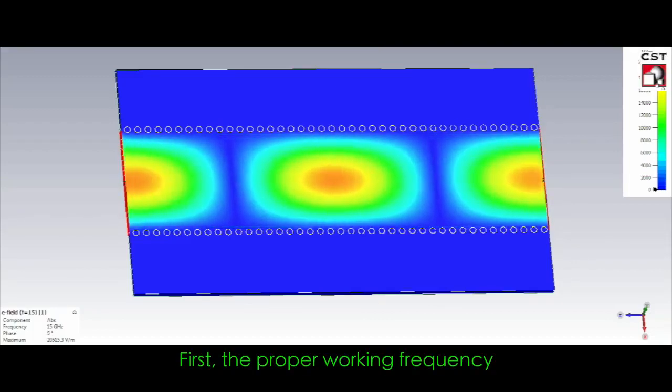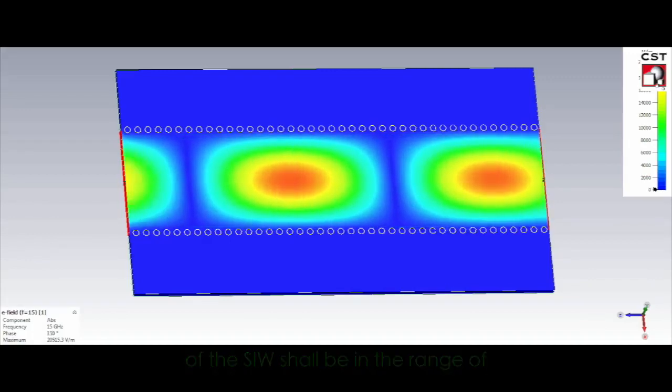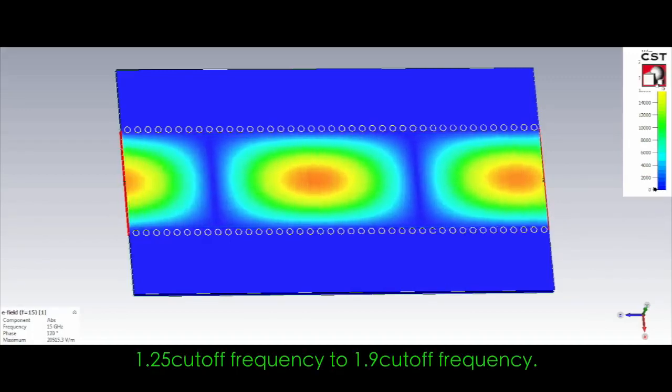First, the proper working frequency of the SIW shall be in the range of 1.25 cutoff frequency to 1.9 cutoff frequency.